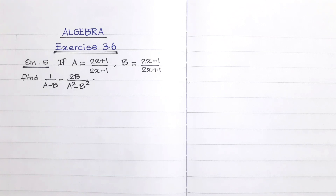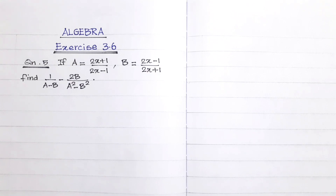If a equals 2x plus 1 divided by 2x minus 1, and b equals 2x minus 1 divided by 2x plus 1. Find: 1 divided by (a minus b) minus 2b divided by (a squared minus b squared).